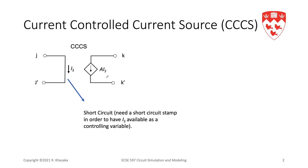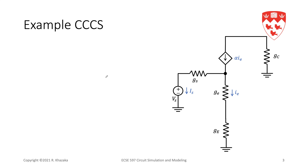This is best illustrated using an example. In this circuit we have a controlled current source whose value is alpha times ie, where ie is the current in the resistor. In this circuit we have four nodes: v1 at node 1, v2 at node 2, node 3, and node 4.